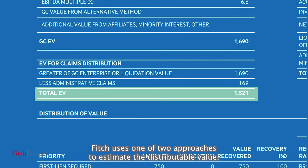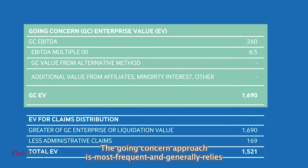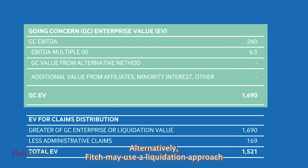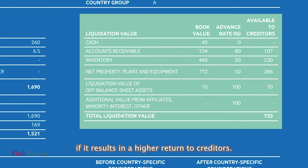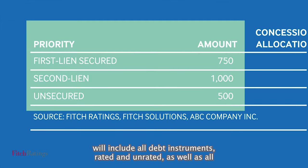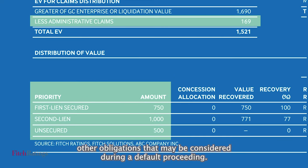Fitch uses one of two approaches to estimate the distributable value. The going concern approach is most frequent and generally relies on estimates of going concern EBITDA and valuation multiple. Alternatively, Fitch may use a liquidation approach if it results in a higher return to creditors. The estimate of creditor claims will include all debt instruments — rated and unrated — as well as all other obligations that may be considered during a default proceeding.